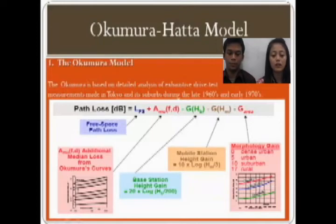LFS is free space path loss or free space propagation path loss. And then AMU(FC) is median attenuation relative to free space. And then G(HB) is base station antenna height gain equals 20 times log(HB divided by 200). And the G-area is a morphology gain.